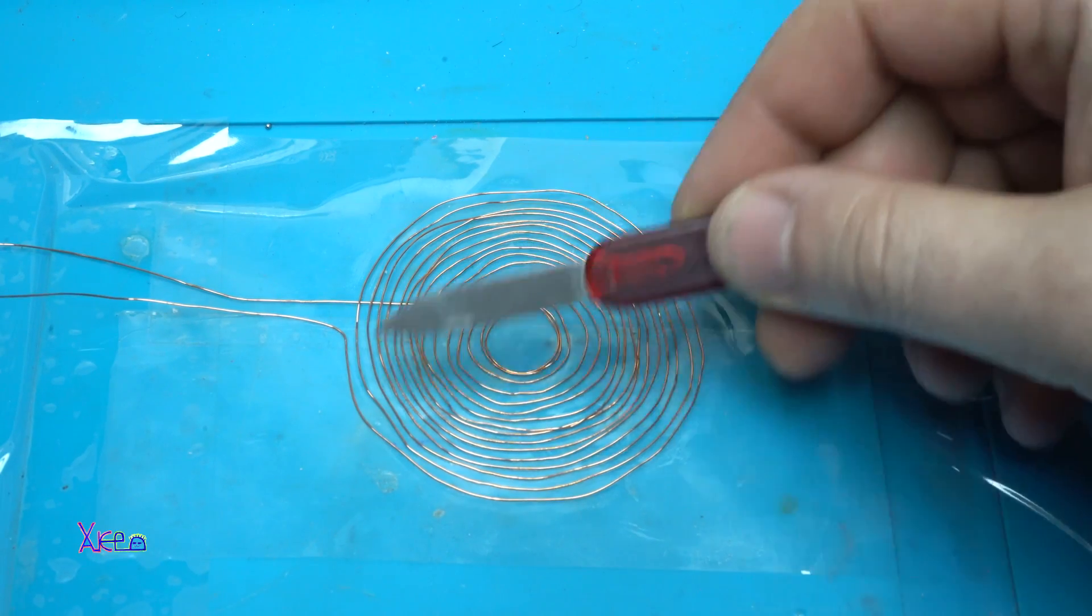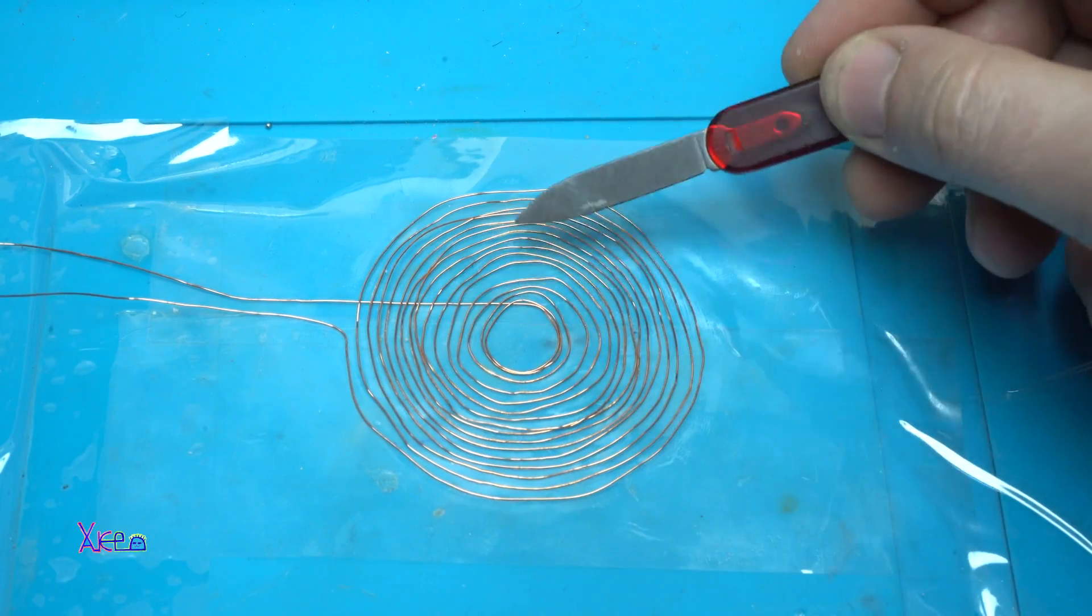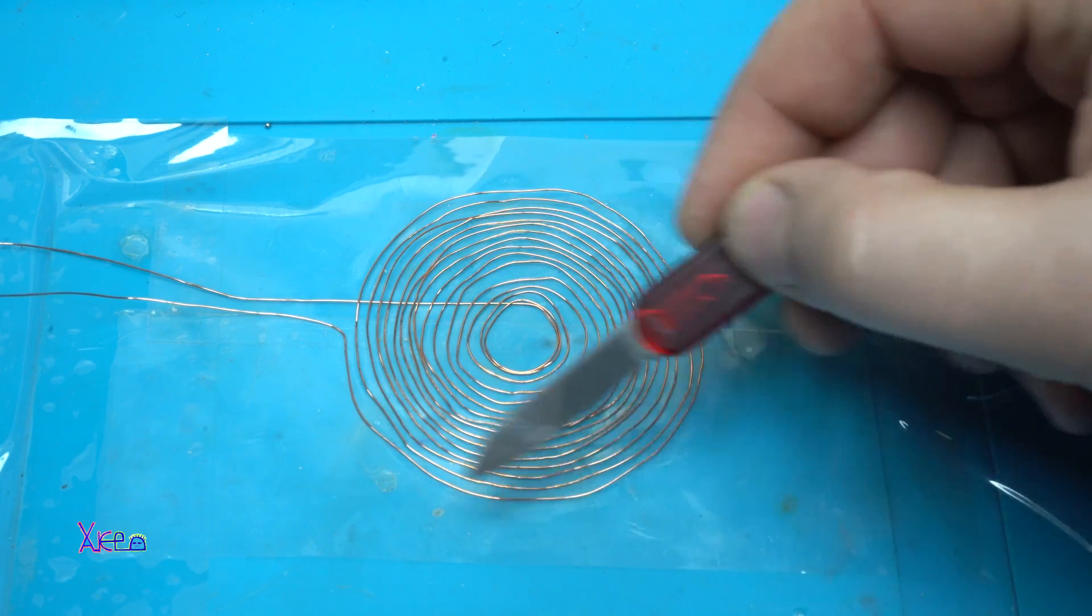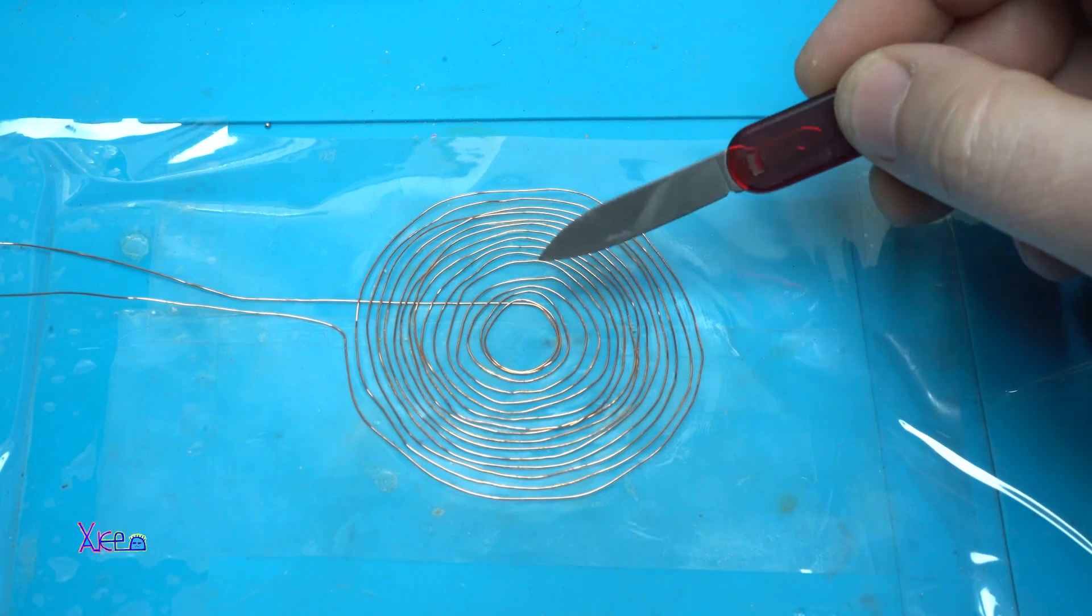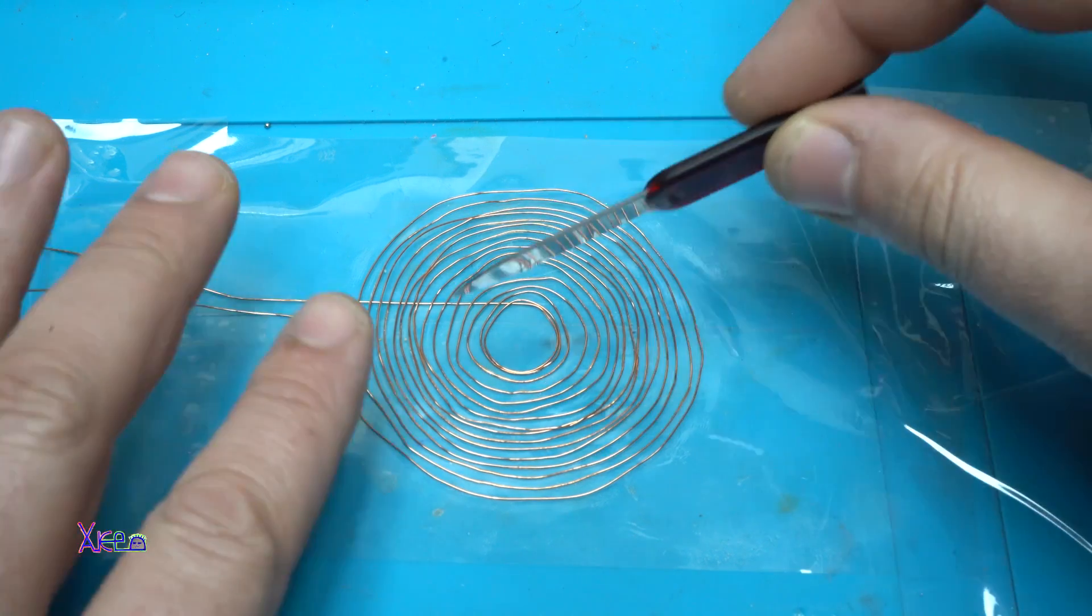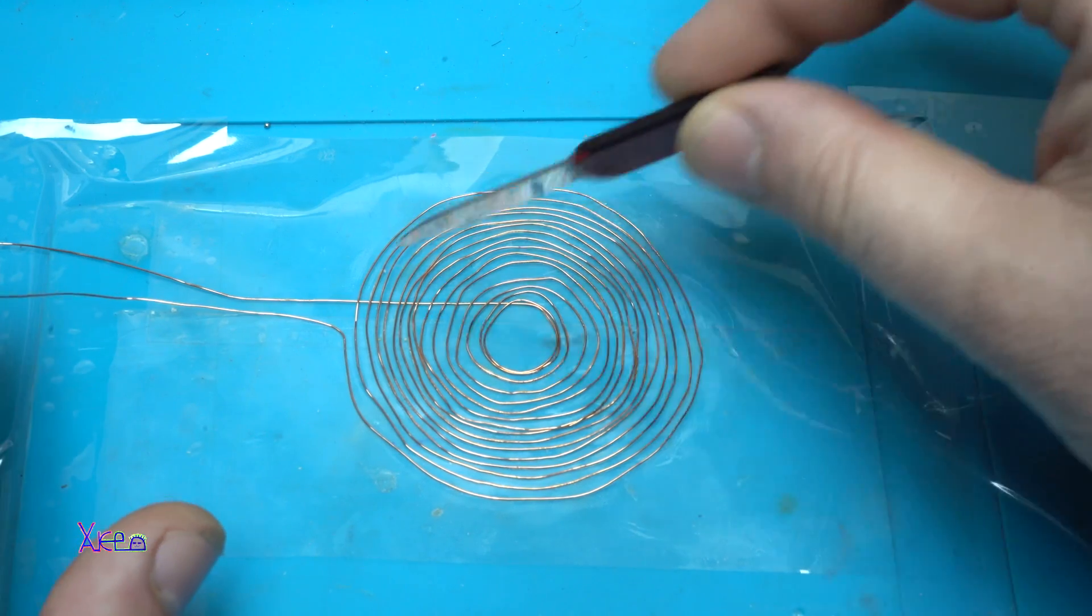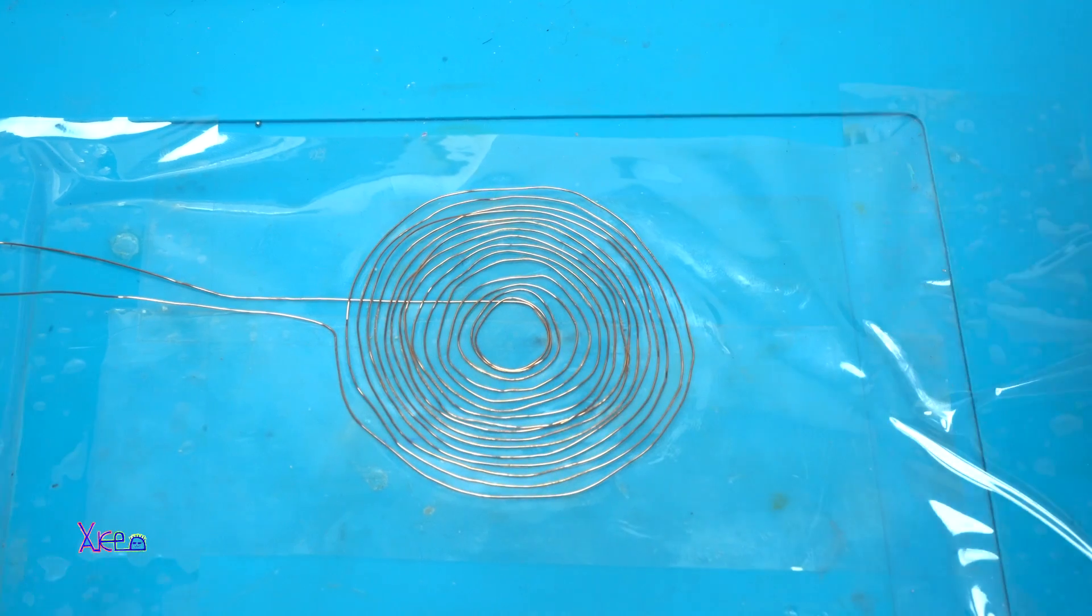Okay, you need to be very patient so you can make this kind of circles with the copper wire, and now it's finished with winding the coils.